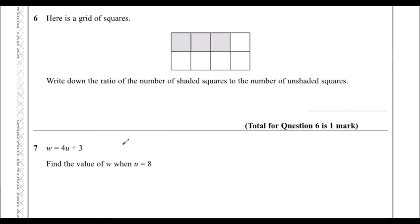Question 6: here is a grid of squares. Write down the ratio of the number of shaded squares to the number of unshaded squares. There are 3 shaded squares and 5 unshaded squares, so the ratio of shaded to unshaded squares is 3 to 5.